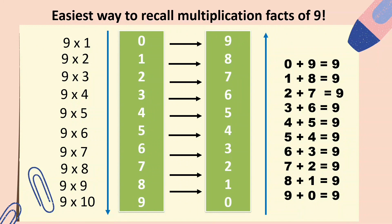So the numbers are 0, 1, 2, 3, 4, 5, 6, 7, 8, 9 on one side, and 9, 8, 7, 6, 5, 4, 3, 2, 1, 0 on the other. When you pair them — 0 and 9 gives 9 (for 9×1), 1 and 8 gives 18 (for 9×2), 2 and 7 gives 27 (for 9×3) — you can see the pattern. The sum of the digits always equals 9: 0+9=9, 1+8=9, 2+7=9, 3+6=9. That's why the multiplication facts of 9 are very special!